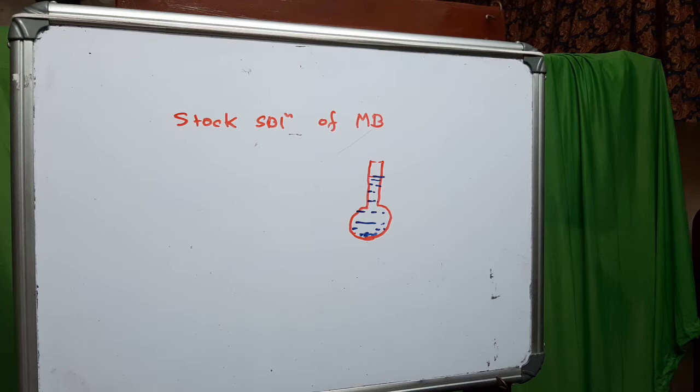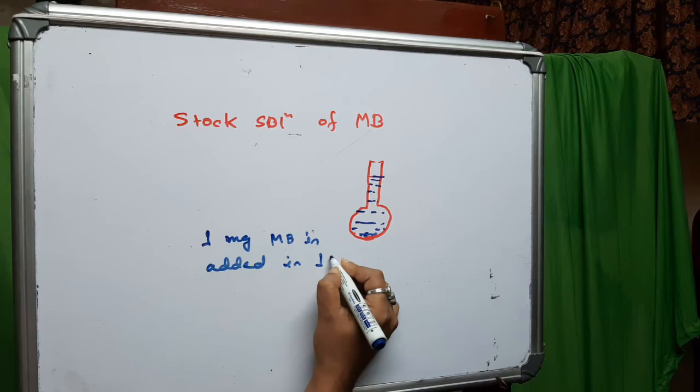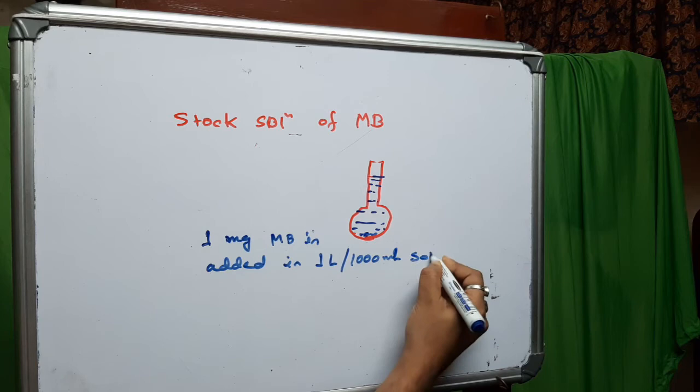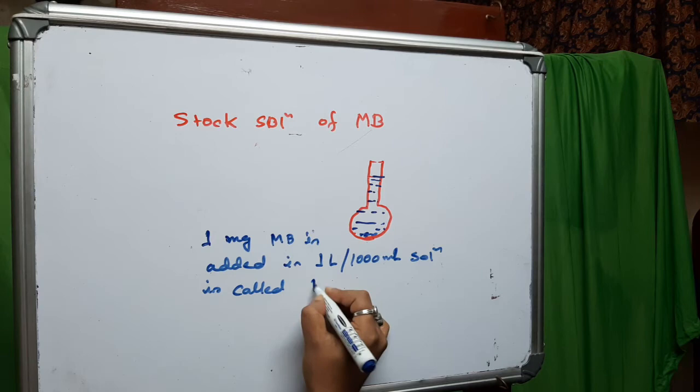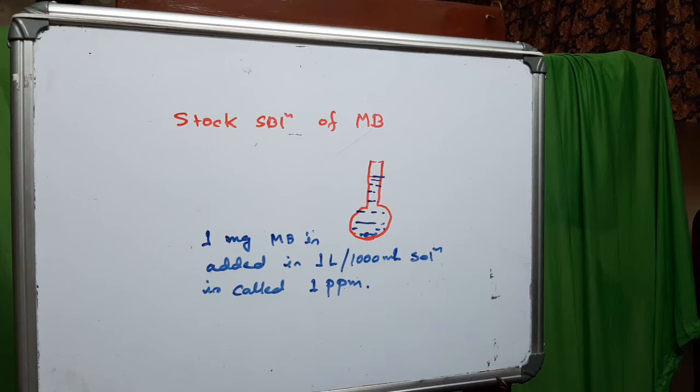1 mg MB added in 1000 ml solution is called 1 ppm. Similarly, here 1000 mg MB added in 1 liter or 1000 ml solution is called a 1000 ppm solution.